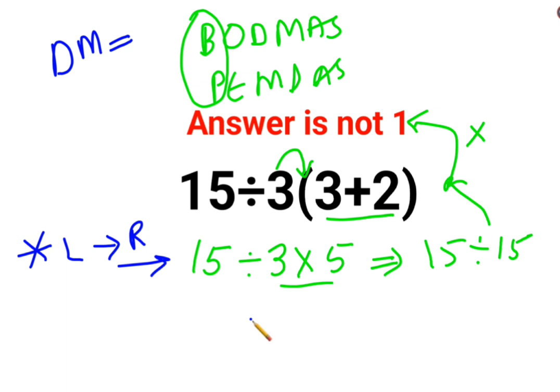So first we will do 15 divided by 3, which is 5, multiplied by 5. So the answer for this question is supposed to be 25.